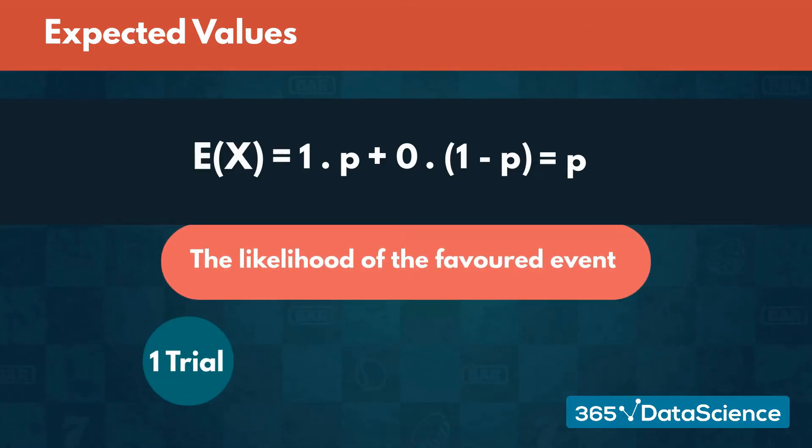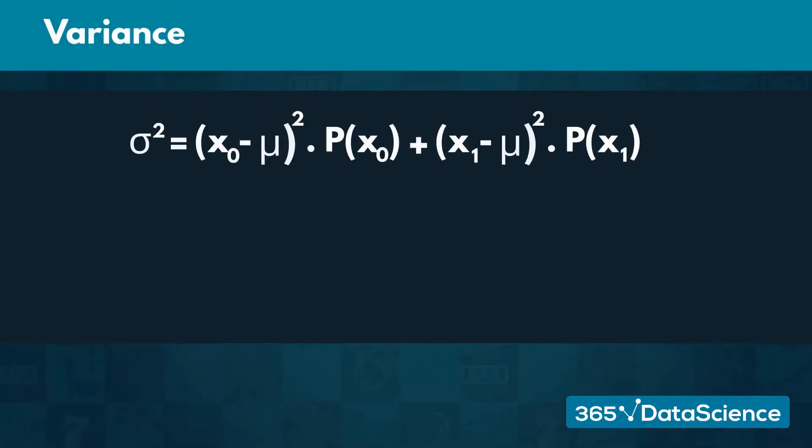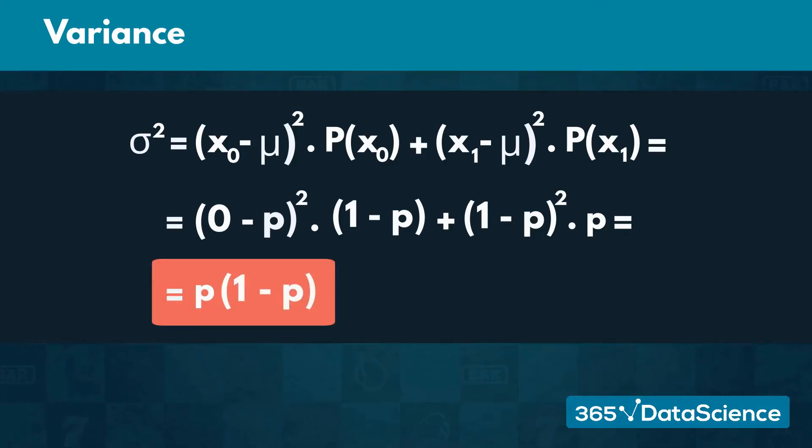Since we only have one trial and a favored event, we expect that outcome to occur. By plugging in p and 1 minus p into the variance formula, we find that the variance of Bernoulli events would always equal p times 1 minus p. That is true regardless of what the expected value is.